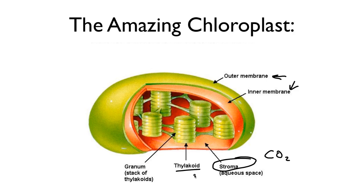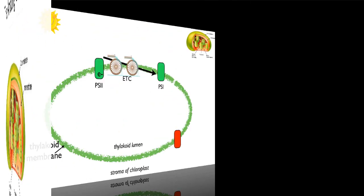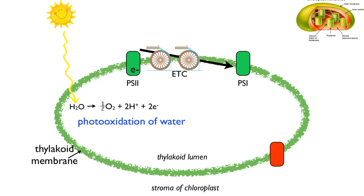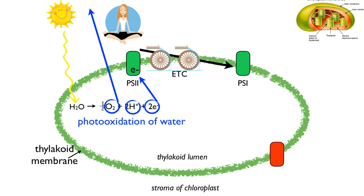The first thing we need is a source of electrons. The electrons come from water. Photosynthetic organisms use sunlight to split water molecules — this is called photo-oxidation. From splitting water, you get oxygen, hydrogen, and electrons. The electrons are going to fuel the entire system of the light reactions. The oxygen produced is the source of atmospheric oxygen. The protons generated contribute to a proton gradient in the thylakoid lumen, which will be used to make ATP.